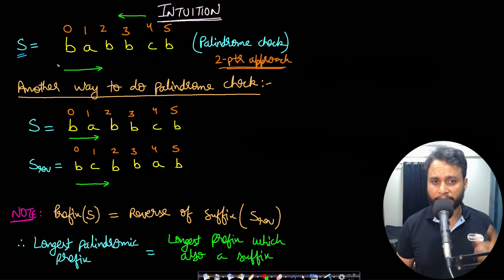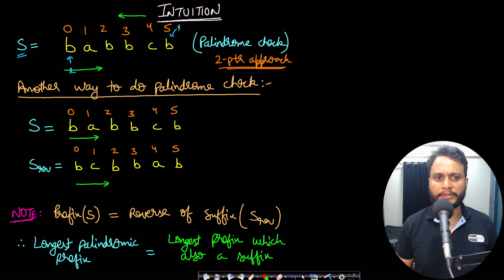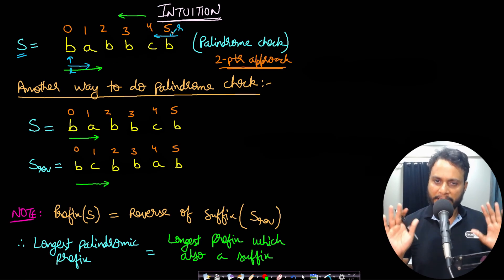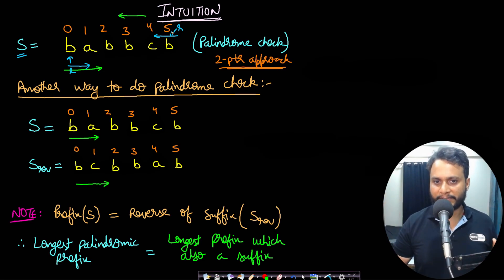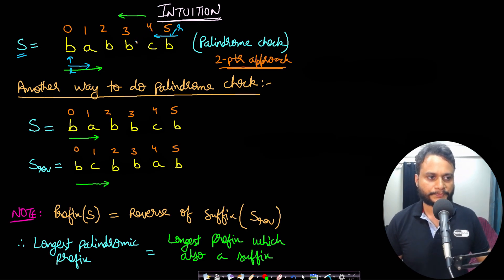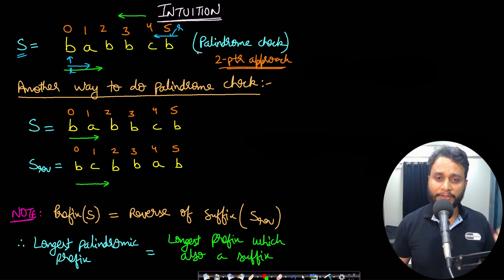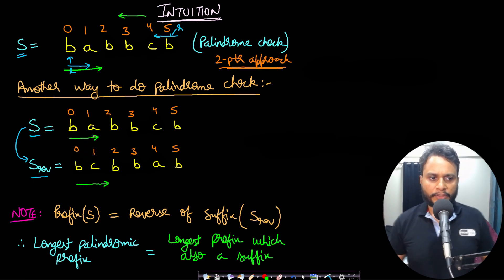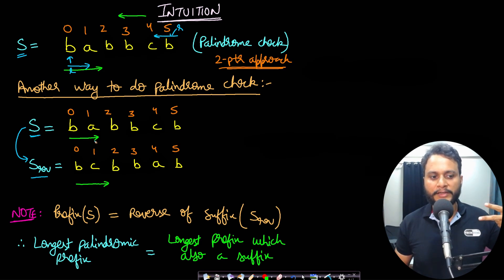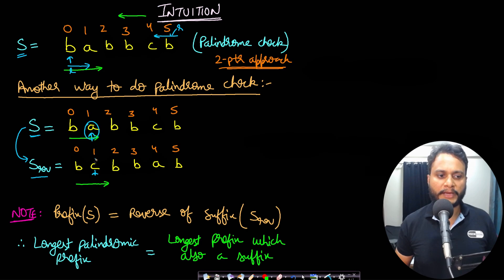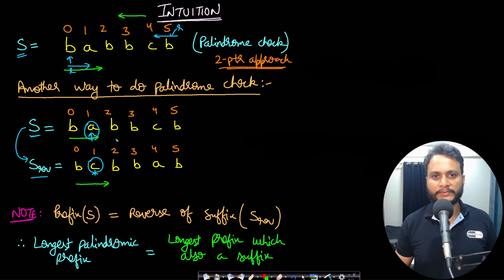Let's look at another intuition. For string 'babbcb', a simple palindrome check uses left and right pointers moving inward — if l ≥ r, the string is a palindrome. Alternatively, if you take s and its reverse s_reverse side by side, you can go from the same end and check: if the original string is a palindrome, s and s_reverse will always match completely.